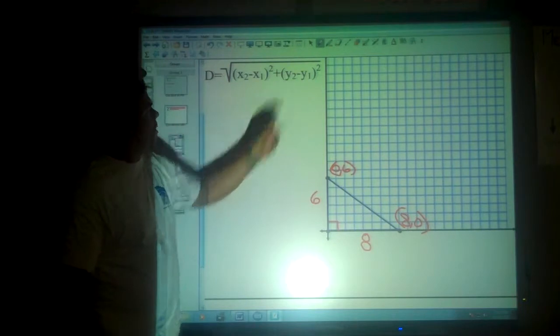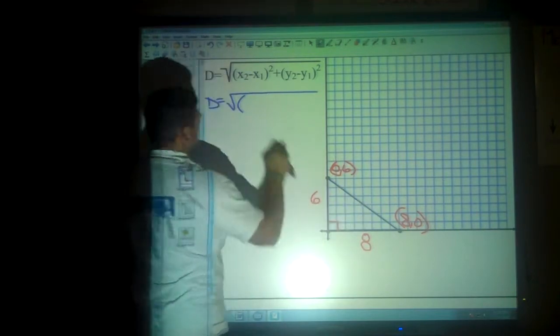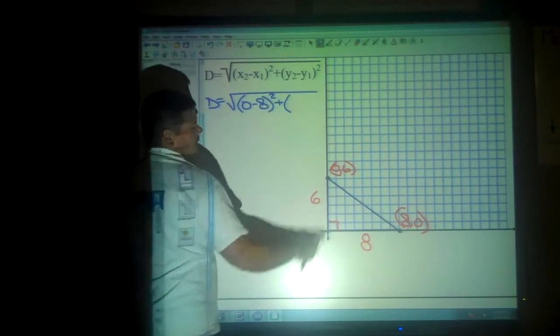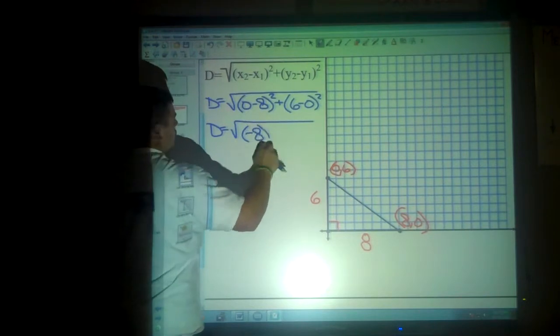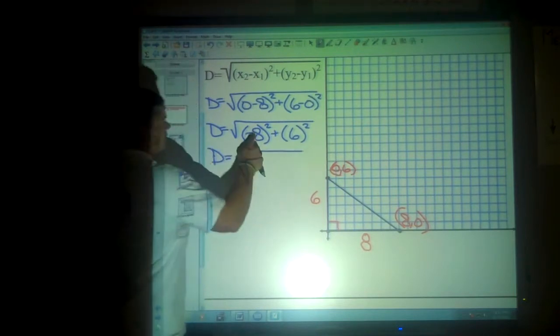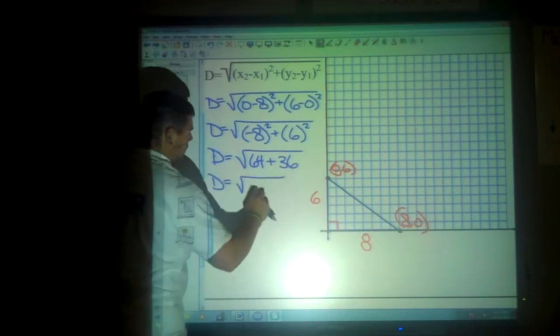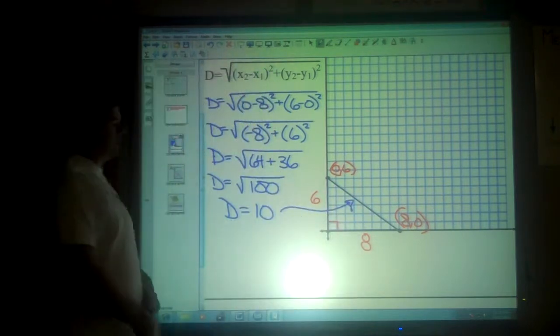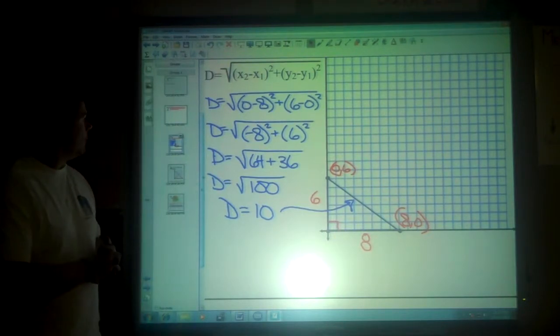So if we're going to plug these into the distance formula, we would say d is equal to the square root. And then we would substitute and put the x values in. So I'll go 0 minus 8, which doesn't matter that it comes out to a negative because I'm going to end up squaring it anyway, plus 6 minus 0 for the y's, which also is going to get squared. I now have the distance as equal to negative 8 squared plus 6 squared. And negative 8 times negative 8 makes positive 64. 6 times 6 makes 36. We are now dealing with the square root of 100, which means the distance is 10 units. So the hypotenuse is 10. This particular triangle is a 6, 8, 10 right triangle, which makes it a Pythagorean triple.